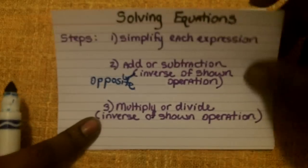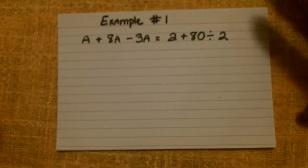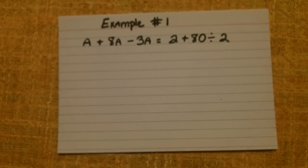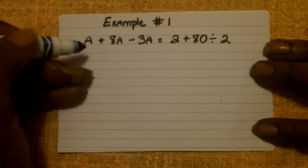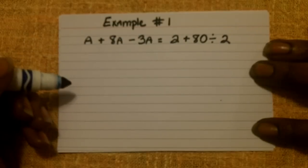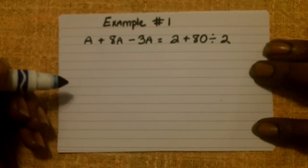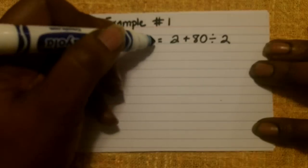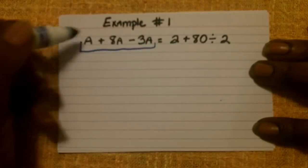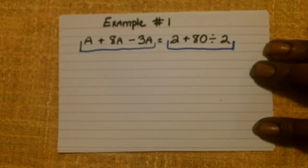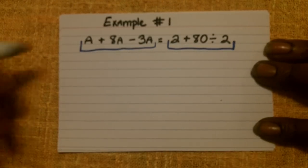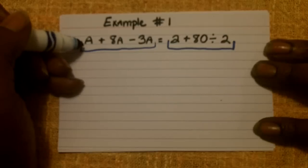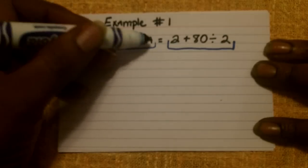So let's do a few examples together just so you can see a few being worked out. Example number one is written here. Step one says to simplify each expression. We have an expression on the left-hand side of the equal sign and an expression on the right-hand side as well. On the left-hand side, we have 1a plus 8a minus 3a.